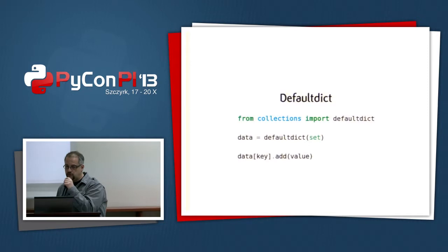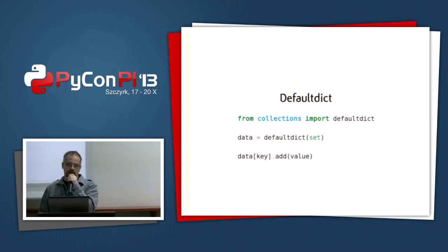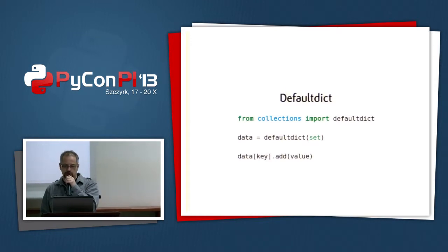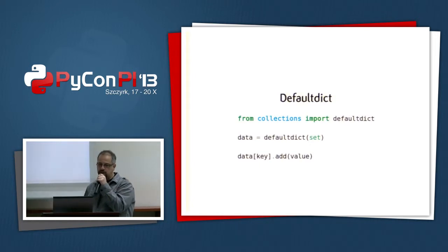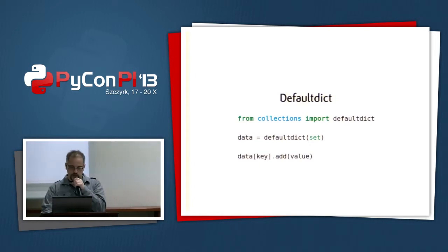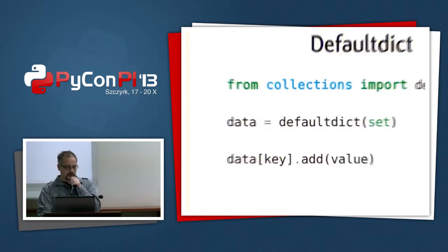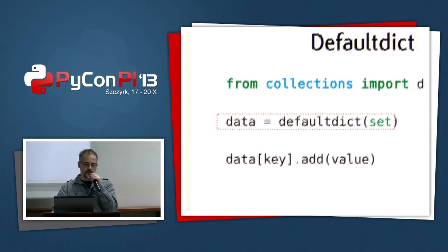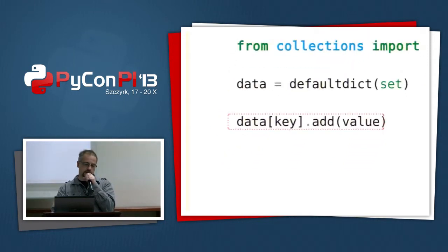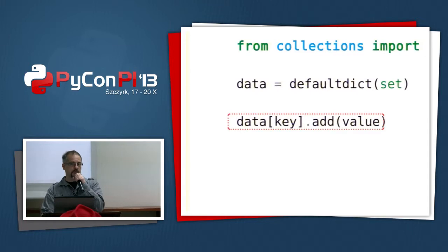This is a fairly common pattern when you have a lot of values per key — every value in your dictionary should be a list or a set. It's very common to do this, or another dictionary, or anything mutable. Today you would use a defaultdict, because with defaultdict, if you access a key that doesn't exist it will just create it for you.